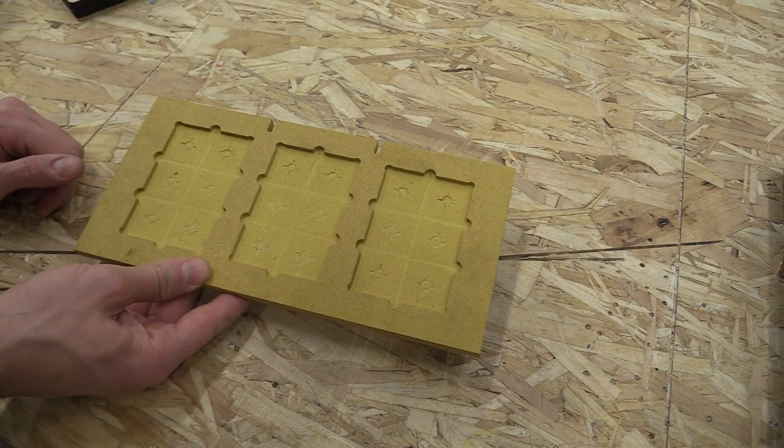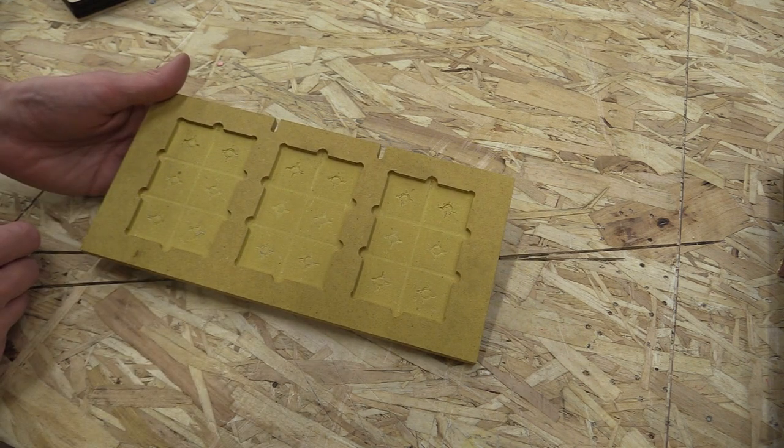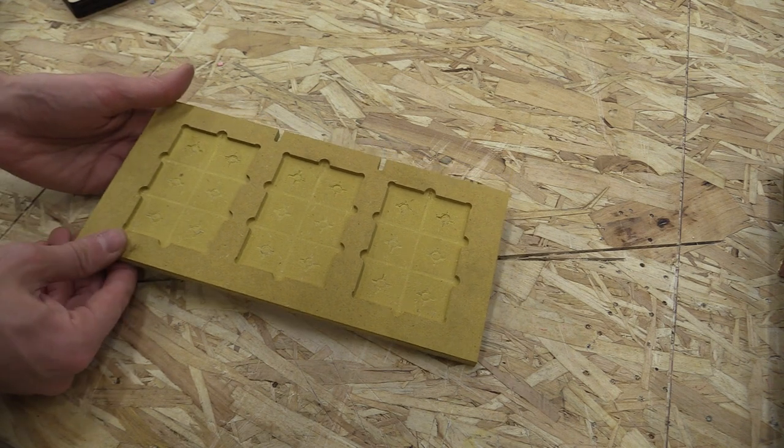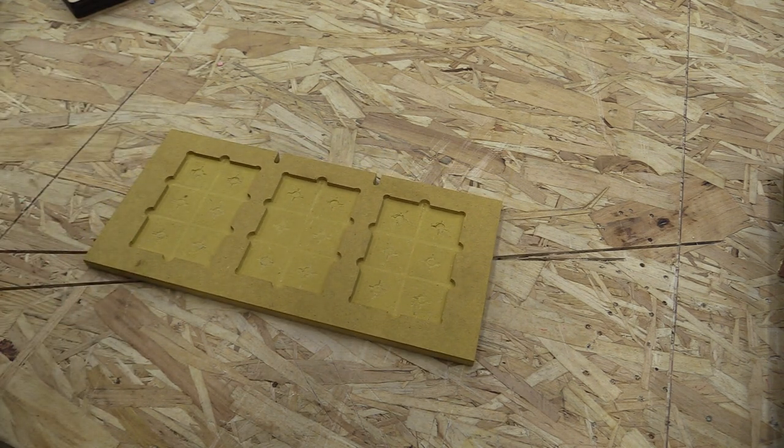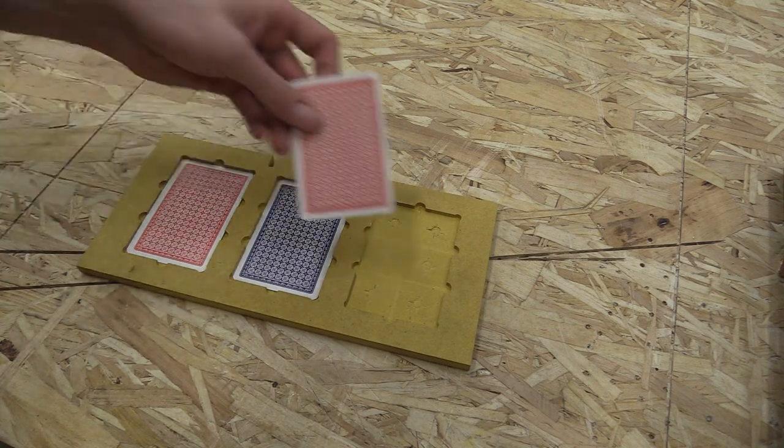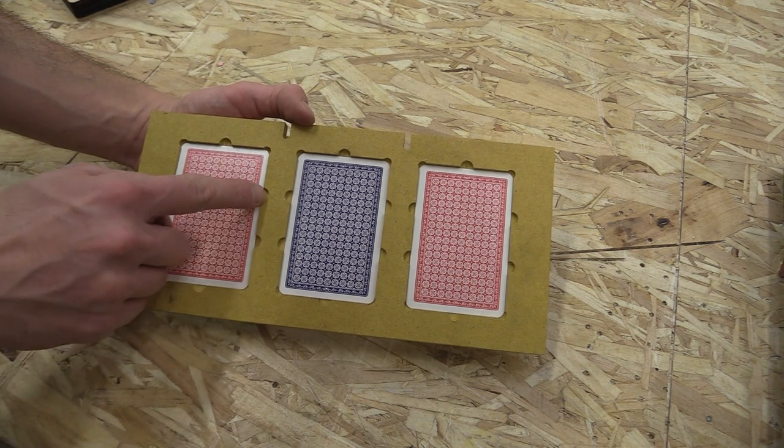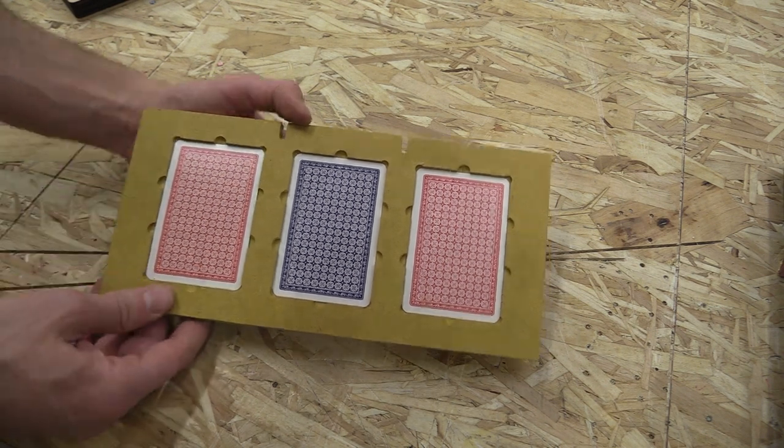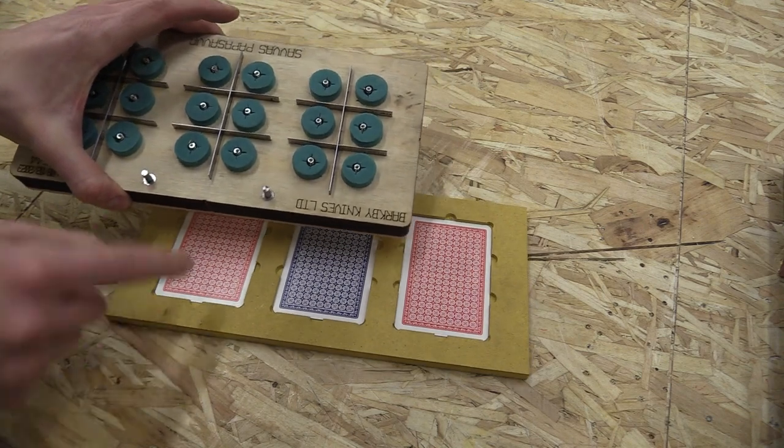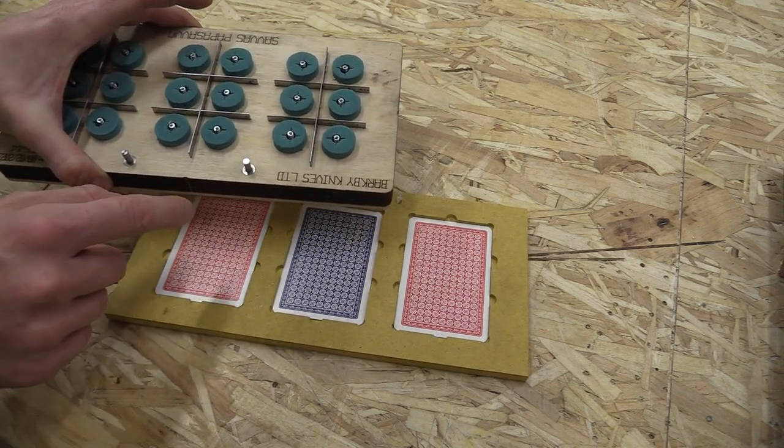So this is the template to hold the playing cards. I've already used it to try it out. Just to describe what's here, I have a recess which the playing cards fit into. I have these little notches cut out which are so the crease bars can extend a bit further out than the playing cards.